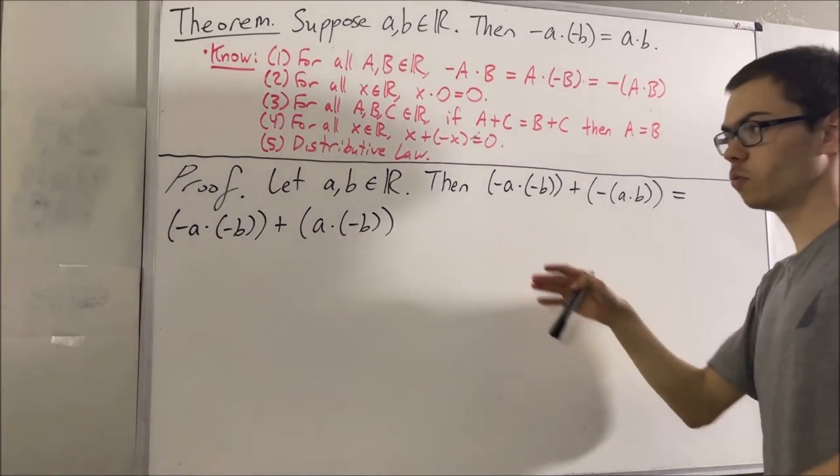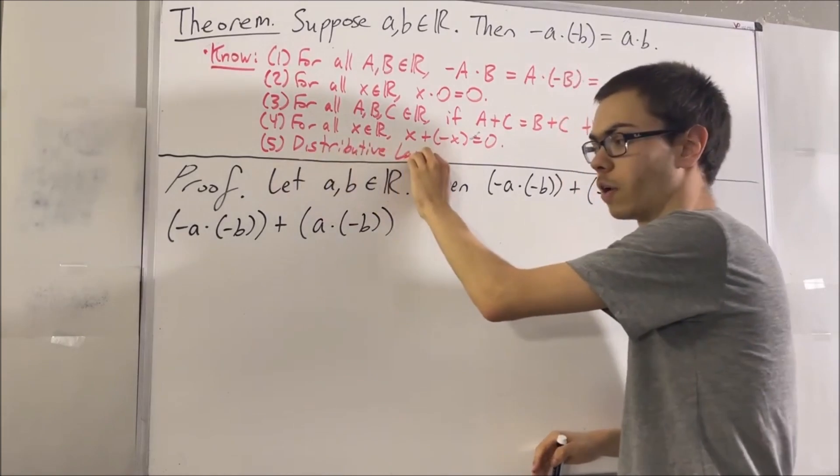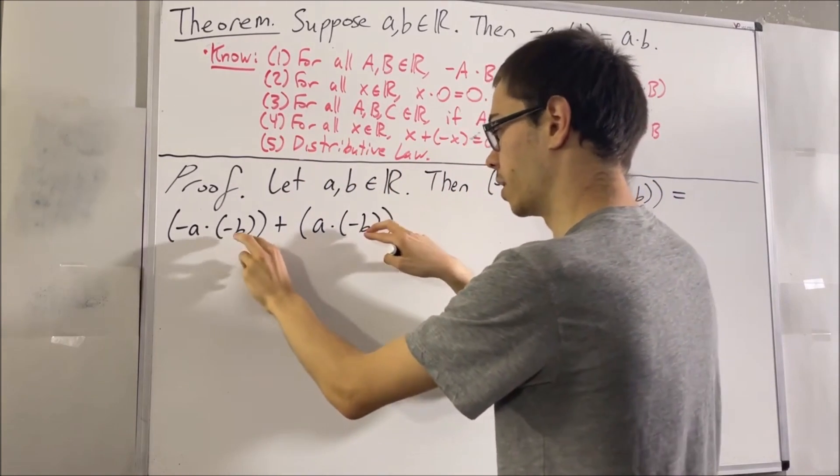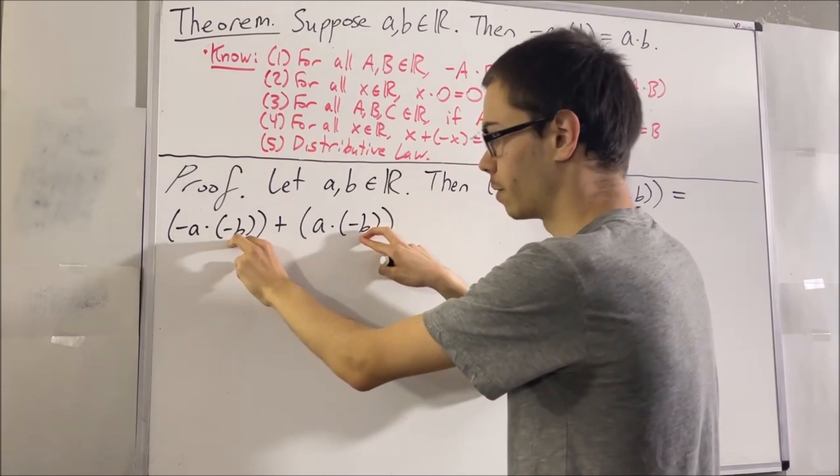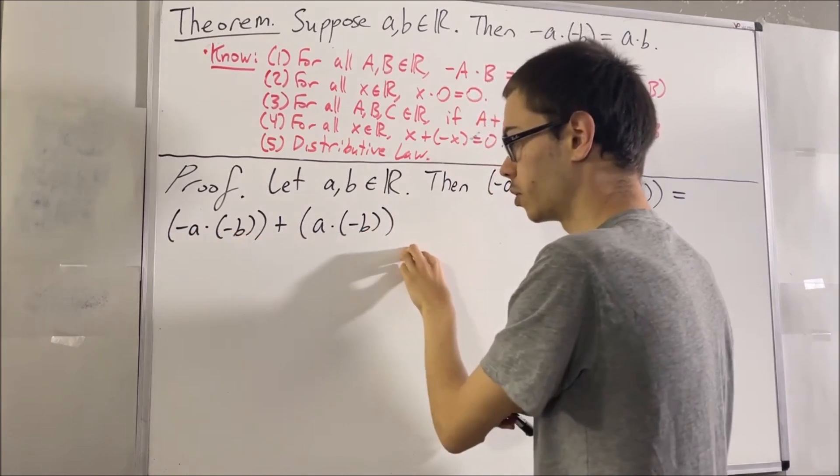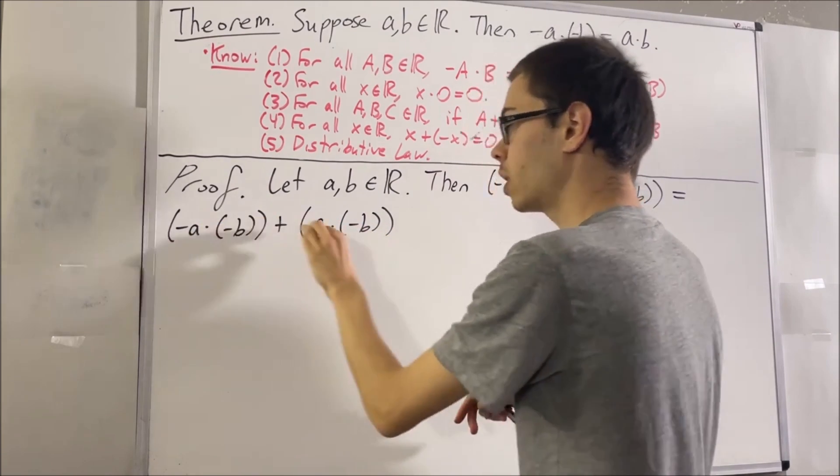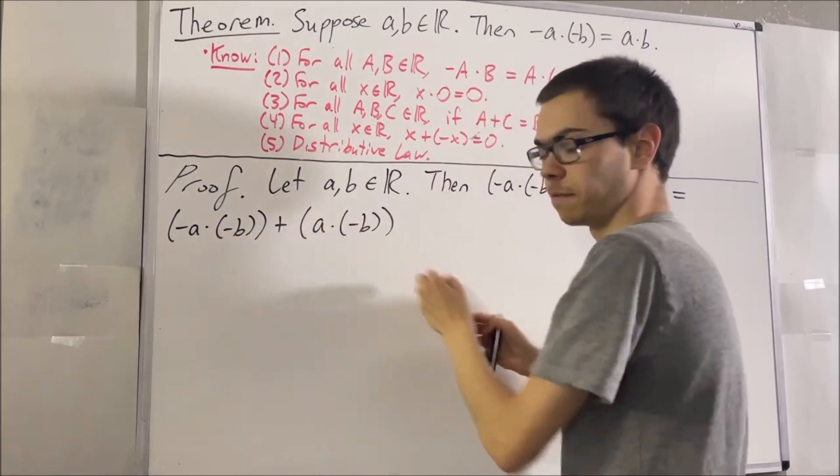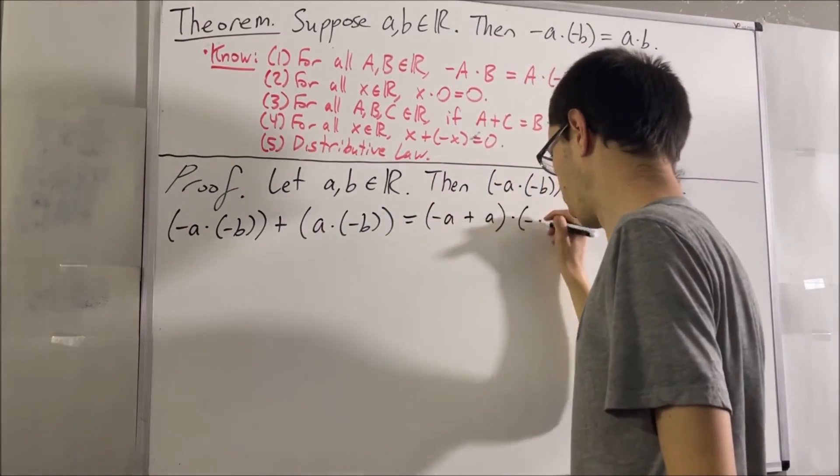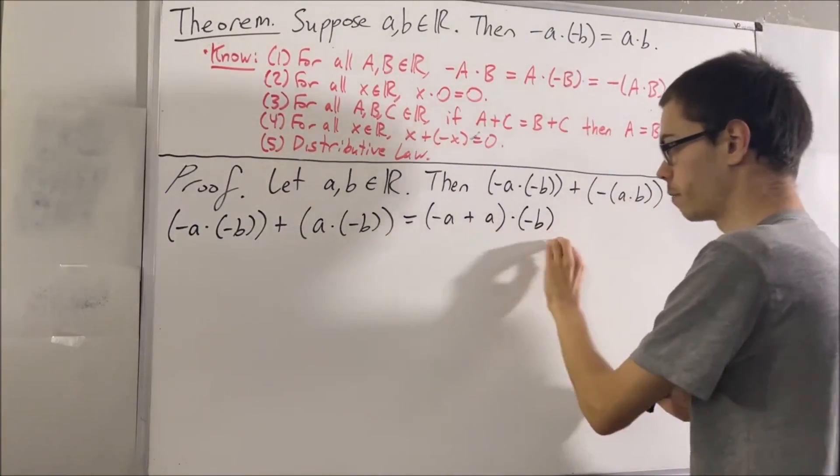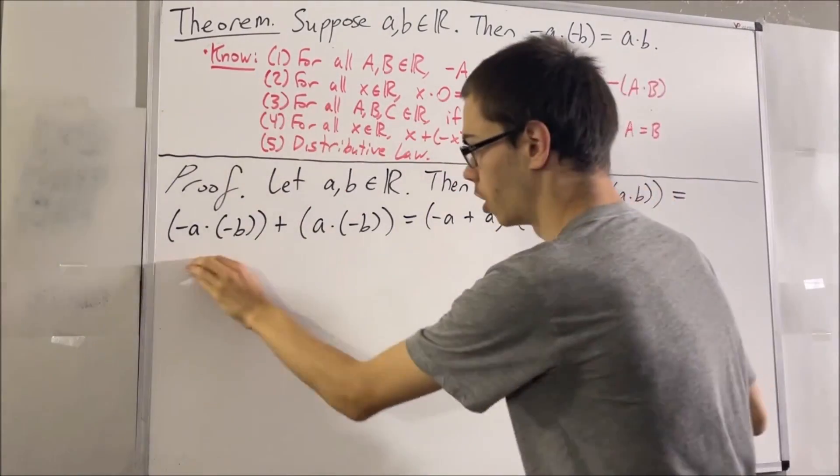Now notice we can apply the distributive law. We see that in both of these two parentheses, the number negative B they have in common. So this entire thing is equal to the negative of A plus A times negative B. You can verify by distributing the negative of B across that these two are equal.